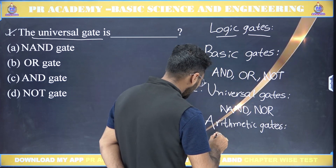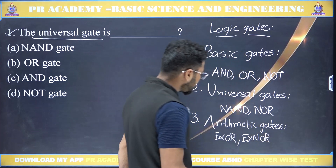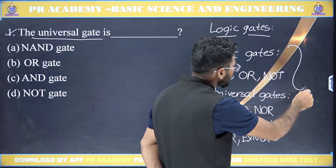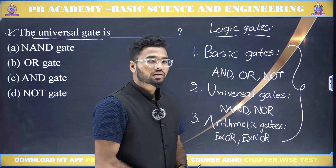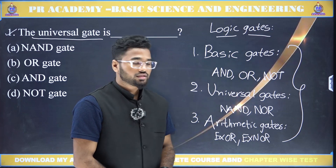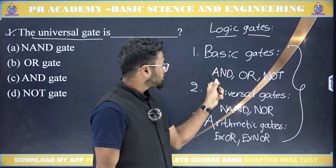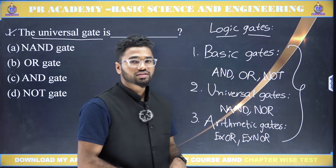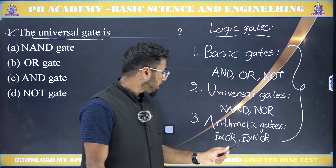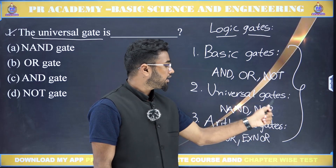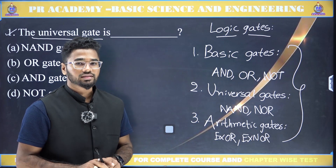The third classification is arithmetic gates, which are XOR gate and XNOR gate. So logic gates are classified into three types: basic gates (AND, OR, NOT), universal gates (NAND and NOR), and arithmetic gates (XOR and XNOR). NAND gate and NOR gate are called universal gates because we can realize AND, OR, and NOT gates using them.